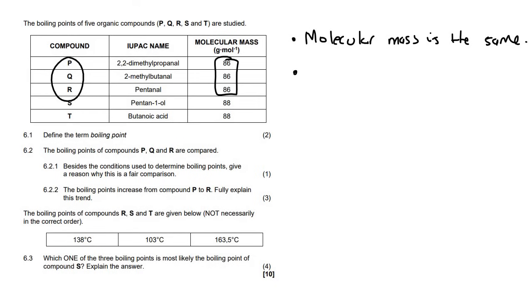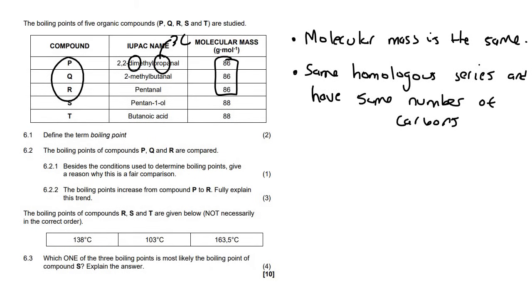Another one you could say is that they're all from the same homologous series. And they have the same number of carbons. Let me show you what I mean. This one is a prop, which is three carbons. But then it's got a dimethyl. So it's got two methyls. So that means it's got a total of five carbons.